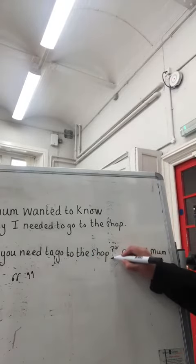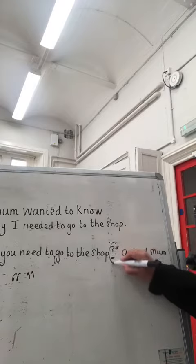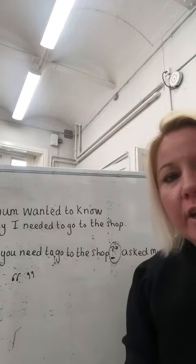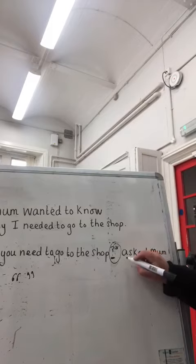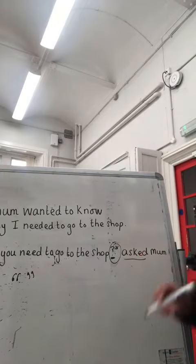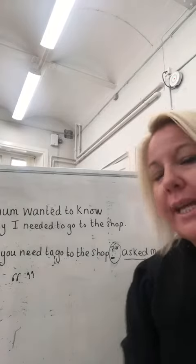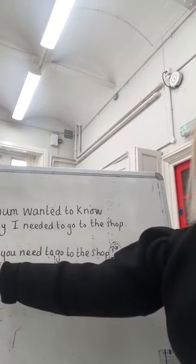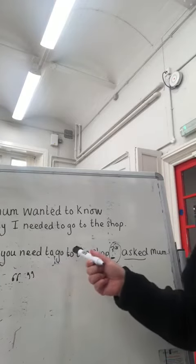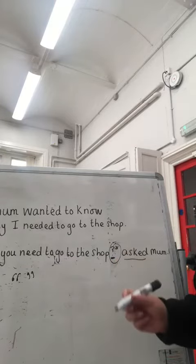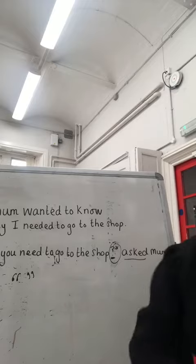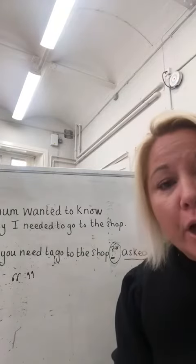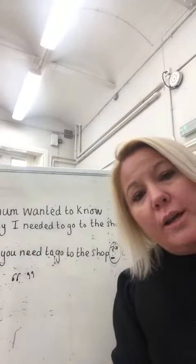In this case, it's a question, and therefore the question mark goes inside the inverted comma at the end. How it's spoken — in this question it's "asked" — goes outside the inverted commas, and then there's a full stop at the end. So: inverted comma, "Why do you need to go to the shops?" question mark, inverted comma, asked mum — that would be a perfectly punctuated dialogue sentence.